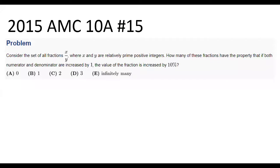In this video, we will be taking a look at the 2015 AMC 10A problem number 15. The problem says: consider the set of all fractions x over y where x and y are relatively prime positive integers. How many of these fractions have the property that if both numerator and denominator are increased by 1, the value of the fraction is increased by 10%?